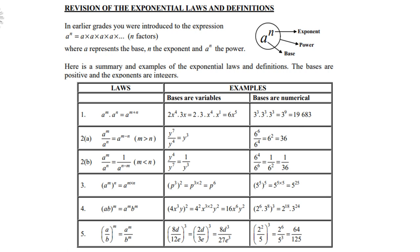The bases are positive and the exponents are integers. Law number 1: a to the power m times a to the power n is equal to a to the power m plus n. That means if we multiply, we add the exponents.